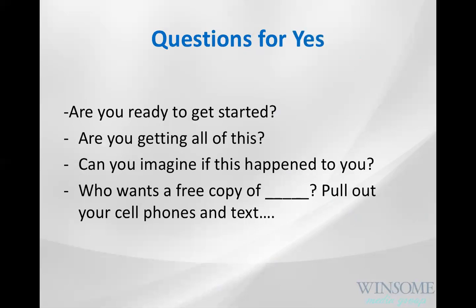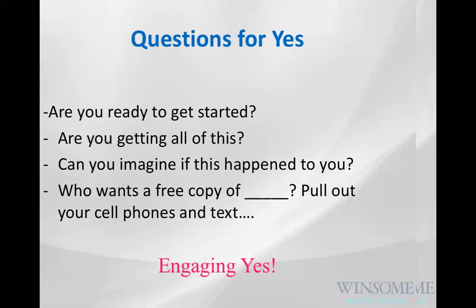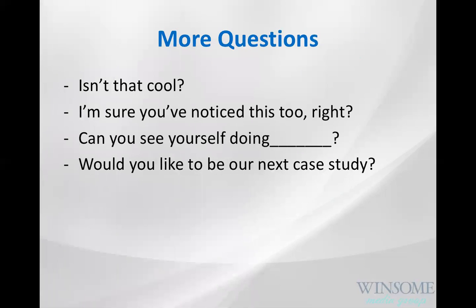This is what we do when we use the text function from the stage: 'Who wants a free copy of — fill in — this blueprint, free report, whatever it is you're getting from the stage.' By the way, if you're speaking and you're not using a text function from the stage, you are missing out on a tremendous amount of list building. That's what engaged yeses look like.